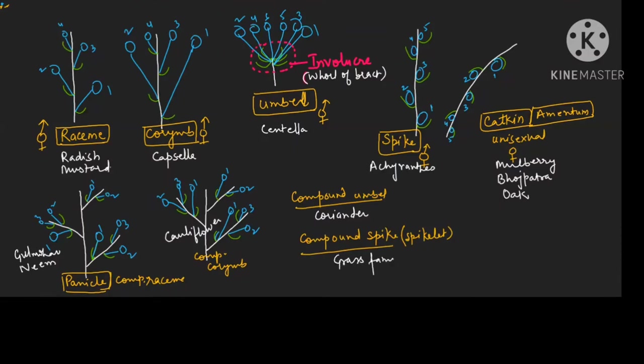So up till here I have explained all the racimose types — branched as well as unbranched. Remember: catkin does not have any branched form. For raceme there is panicle; for corymb there is compound corymb; for umbel there is compound umbel; for spike there is compound spike — but for catkin there is no compound form.